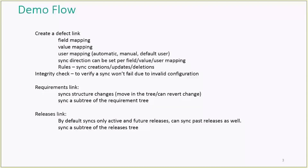The demo flow will focus on the defect link. We will show you how to map fields, how to map specific values, and to have different settings of the user mapping. There are also all kinds of synchronization rules that we'll be showing you in the demo. After the integrity check you'll be able to activate this link manually or permanently, resulting in an automatic data flow between the two endpoints.